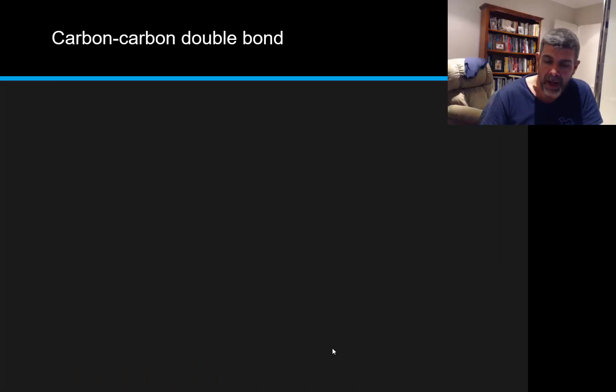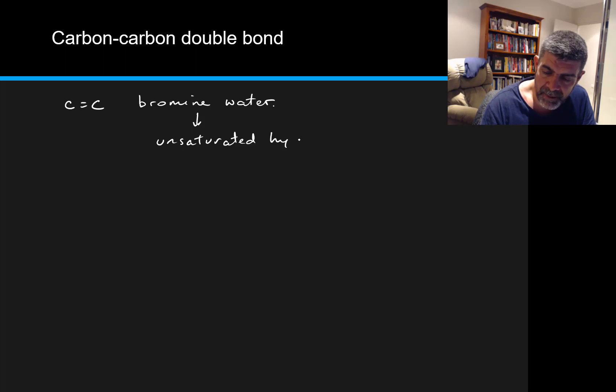So I hope that what you've been thinking as you've looked at the beginning of this video is, well, the carbon-carbon double bond can actually be identified very easily with the addition of bromine water. Bromine water is a great test substance for unsaturated hydrocarbons.